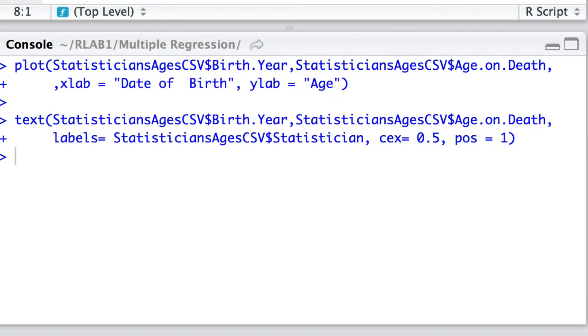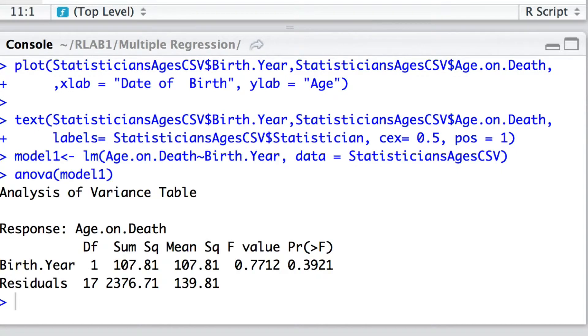So first of all I'm going to fit a model and it's going to be a simple linear regression model of the age of death and see how it might depend on the birth year. Well we fitted the model using the LM routine and here is the analysis of variance associated with that model.